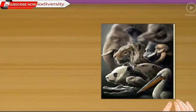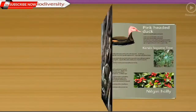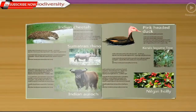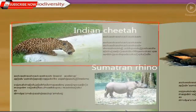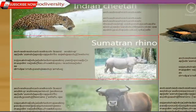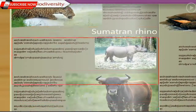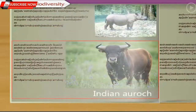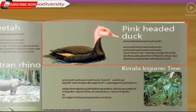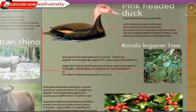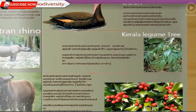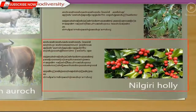Some extinct animals and plant species of India include: the Indian cheetah, Sumatran rhinoceros, Indian aurochs, pink-headed duck, Kerala legume tree, and Nilgiri holly.